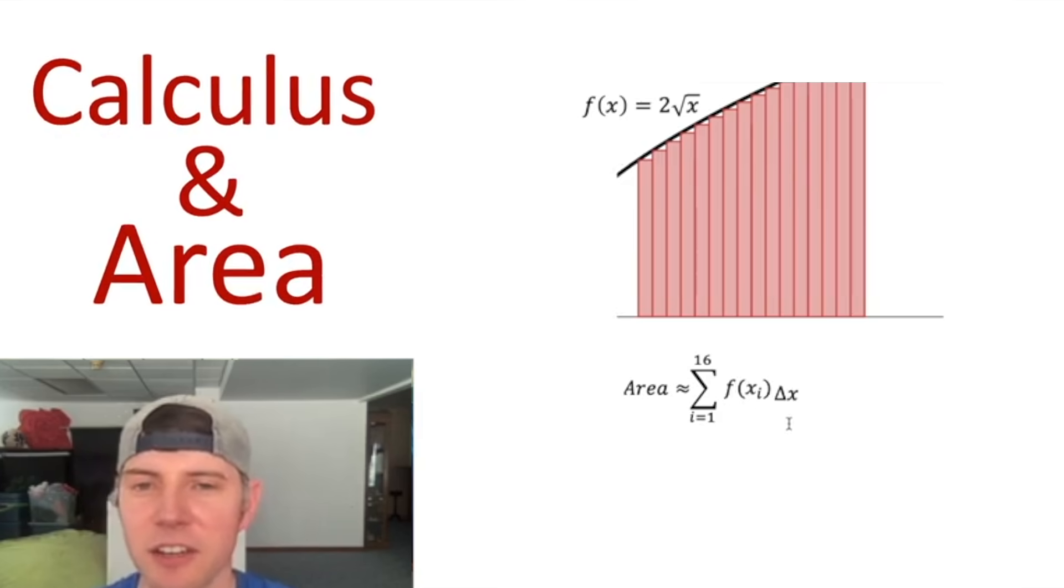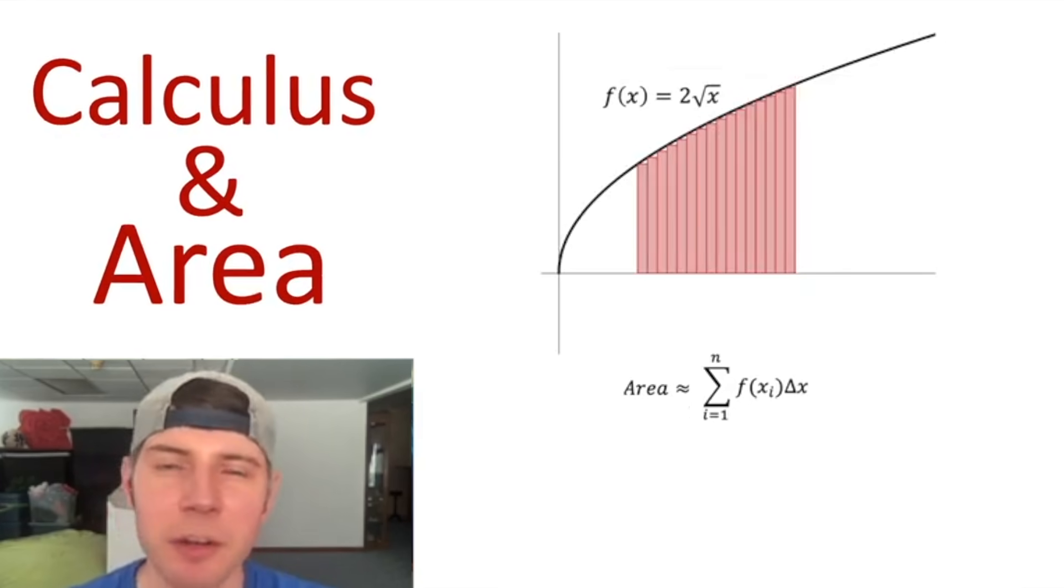Let's move this delta X to the other side. Let's change this 16 to N so we can get any number of rectangles we want. And if we take the limit as N approaches infinity, we'll get closer and closer to the exact area under that curve.